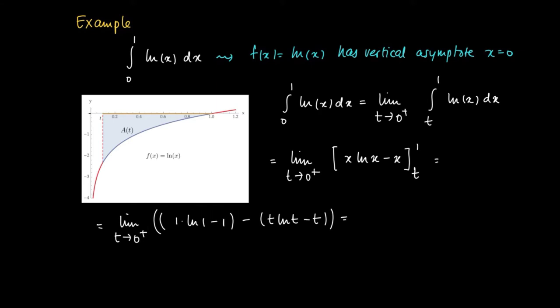The limit for t ln t for t goes to 0 plus equals 0, right? So this is the standard, classic limit that we've calculated using L'Hôpital's rule.